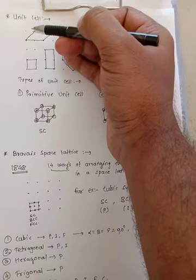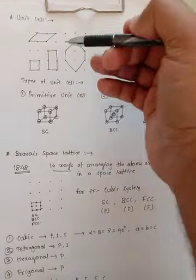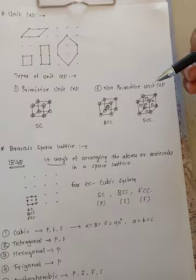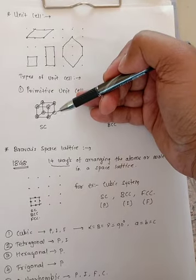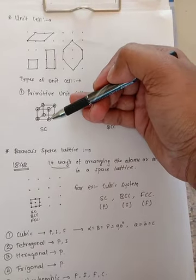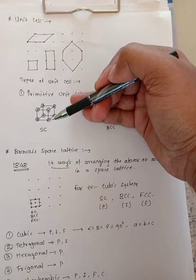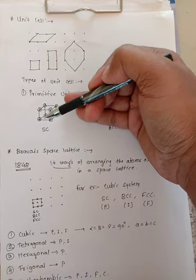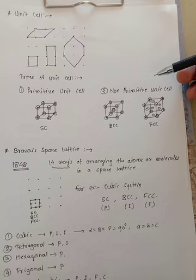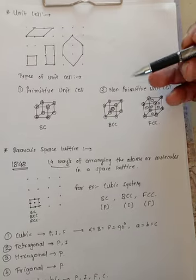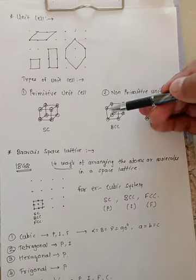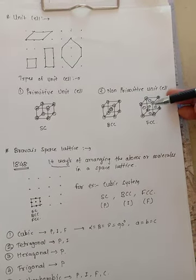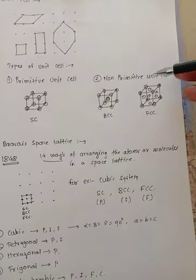The unit cell is divided into two types: first is a primitive unit cell and second is a non-primitive unit cell. In case of a primitive unit cell, all the atoms or molecules are situated at the corners of the unit cell only. In case of a non-primitive unit cell, atoms or molecules are present at the corners of the unit cell as well as at the center of the unit cell and at the faces of the unit cell.